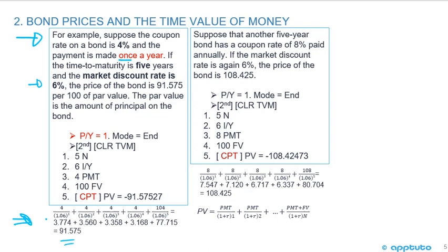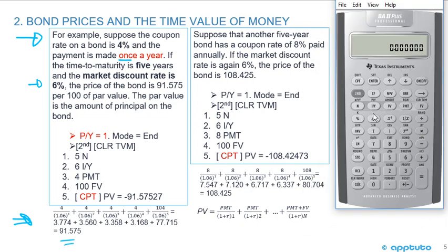We do a present value calculation using 6% for years one through five, adding the present value of each coupon and the par value in year five. Using the algebra, we get 91.575. On the calculator, go to 2nd P/Y — wait, I had a semi-annual bond in there, so I need to change that to periods per year equals one.